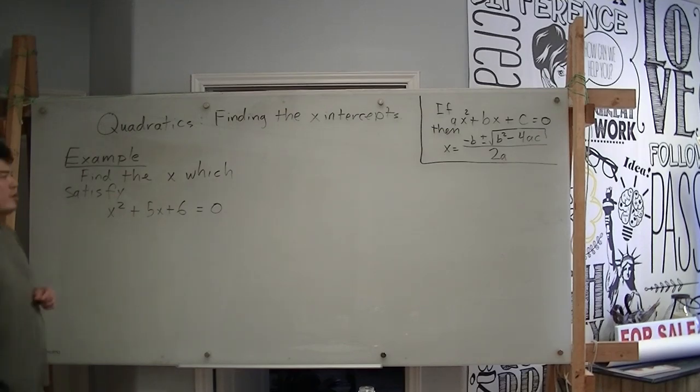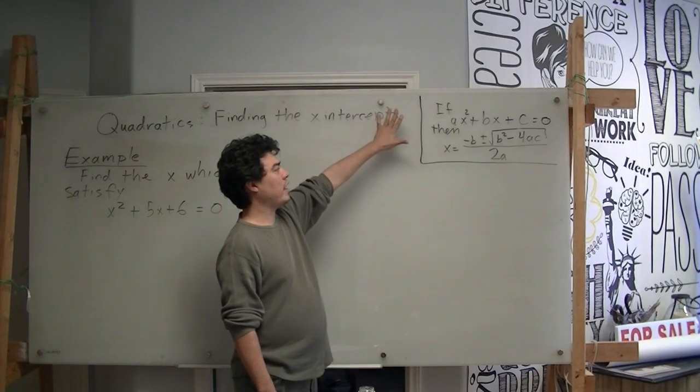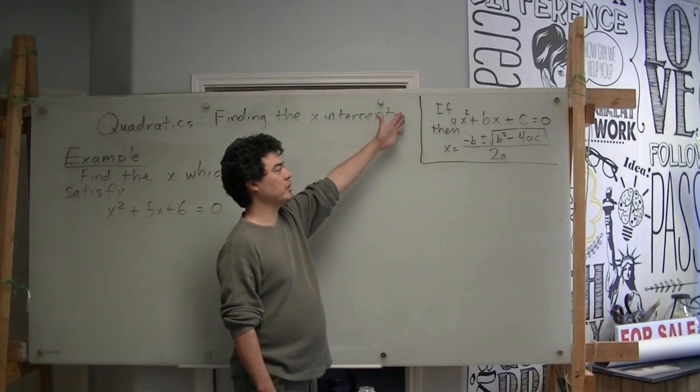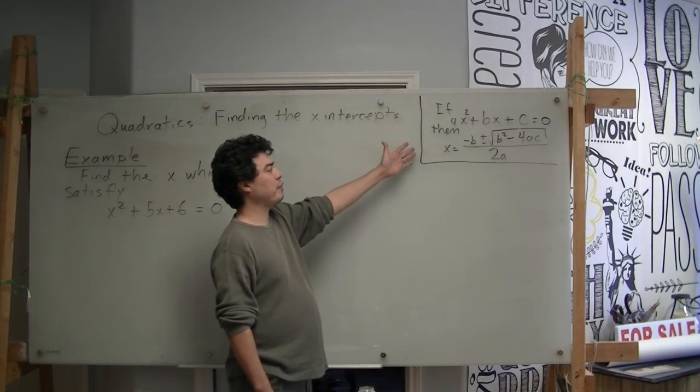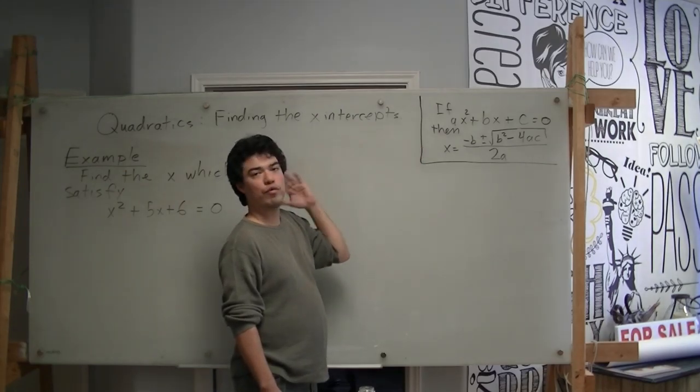So we're going to use, as we mentioned before, the quadratic formula. If ax squared plus bx plus c equals 0, then x equals negative b plus or minus the square root of b squared minus 4ac over 2a.